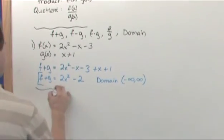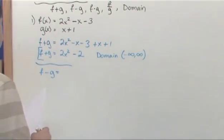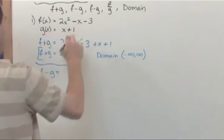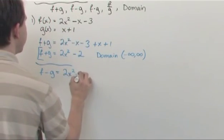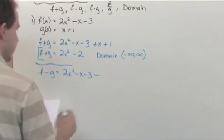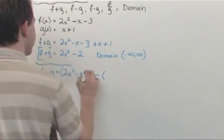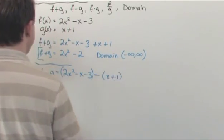Now let's try to find f minus g. f minus g. What would that be equal to? So just take f and we subtract g from it. So it's 2x squared minus x minus 3 minus, and then we're going to subtract off. So this is the first function. And we're going to subtract off x plus 1.